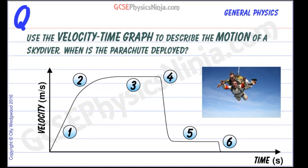Remember that velocity and speed are pretty much the same thing. Velocity is telling us the speed in a certain direction. In this case the skydiver is just falling downwards and is not going to change direction, so velocity and speed are telling the same story here. This could be a speed-time graph and it would be exactly the same, so I'm just going to write speed on the side there.